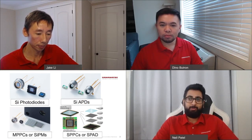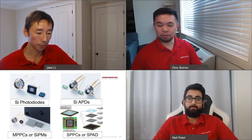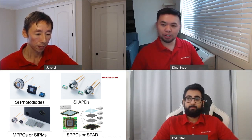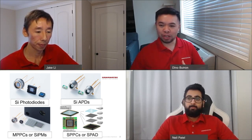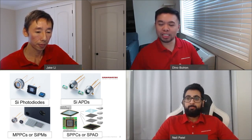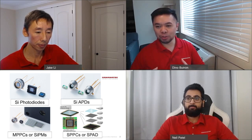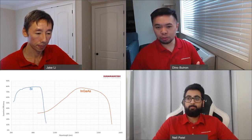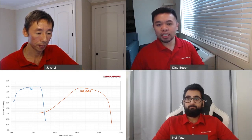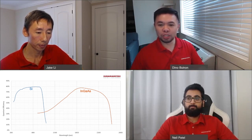There are four main types of solid state photodetectors: photodiodes, avalanche photodiodes, silicon photomultipliers, and SPADs. Photodiodes and avalanche photodiodes are more established and have been around for many decades, while silicon photomultipliers and SPADs have just recently become mainstream products in the last decade or so. All four can be made from different materials, but silicon and InGaAs are the most popular. These detectors all work on the principle of the photoelectric effect, where a photon with sufficient energy striking the material generates an electron-hole pair, which is then measured.